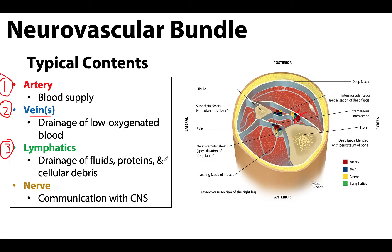And last but certainly not least, all structures will need some form of communication with the central nervous system — either sending signals to or receiving signals from the CNS — and this will be accomplished with a nerve. Nerves are often depicted in yellow in anatomy illustrations.